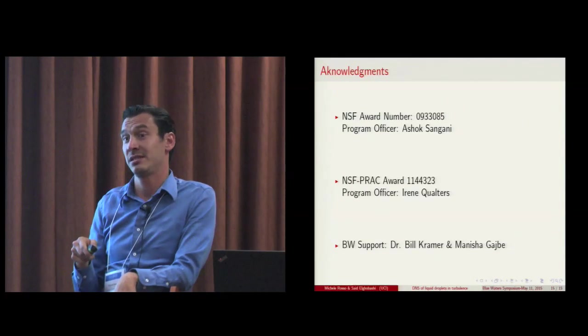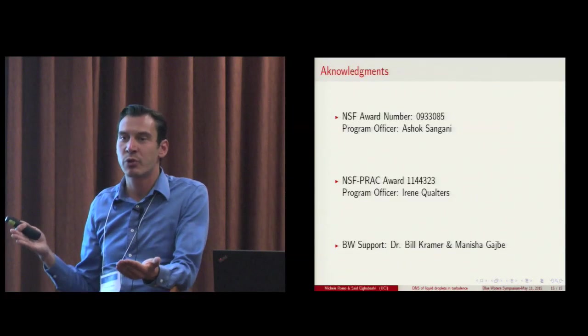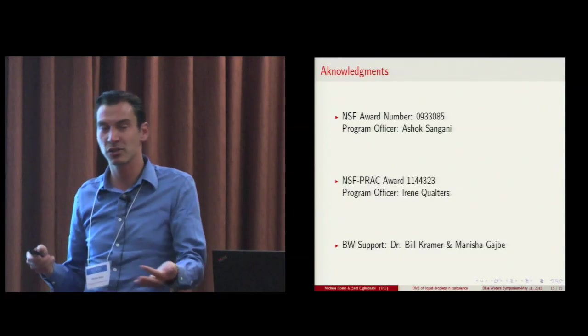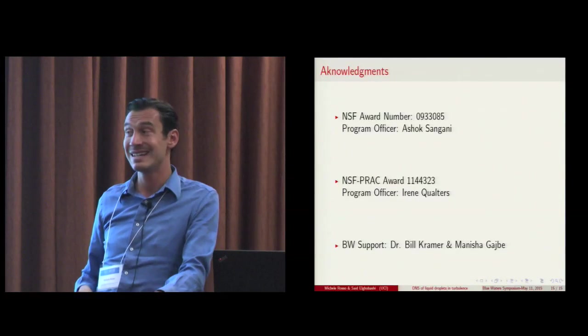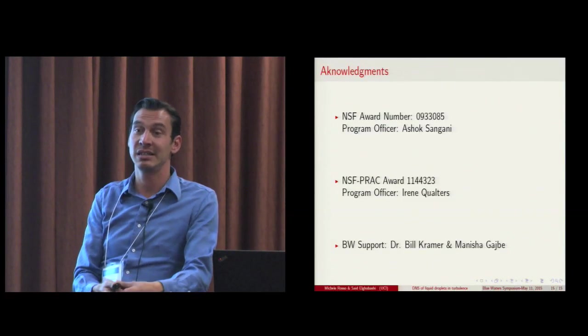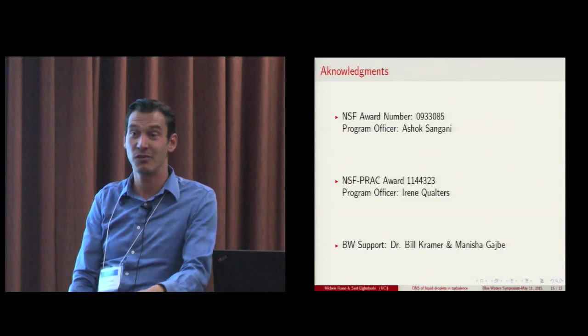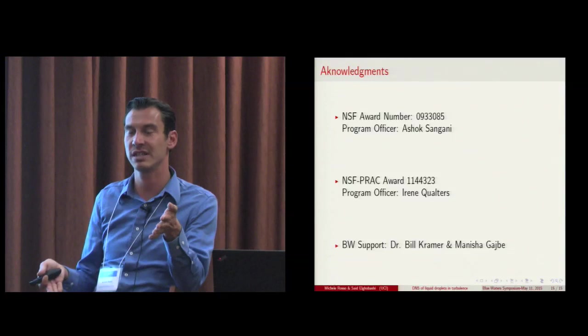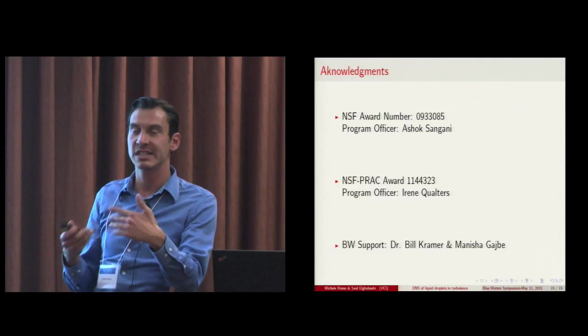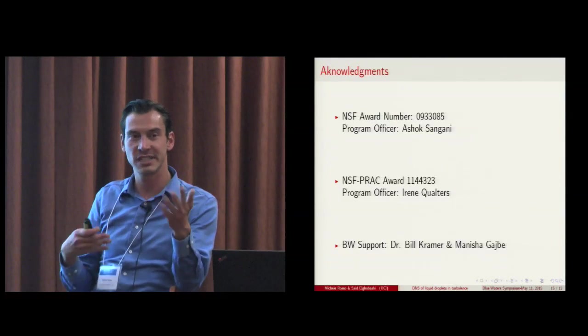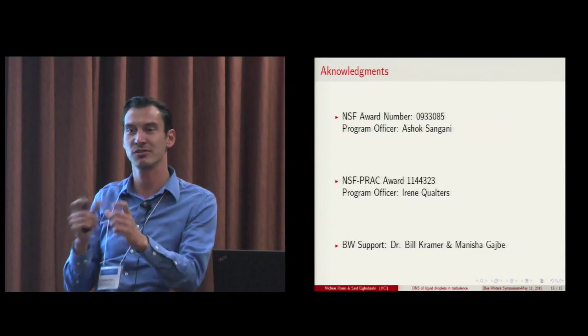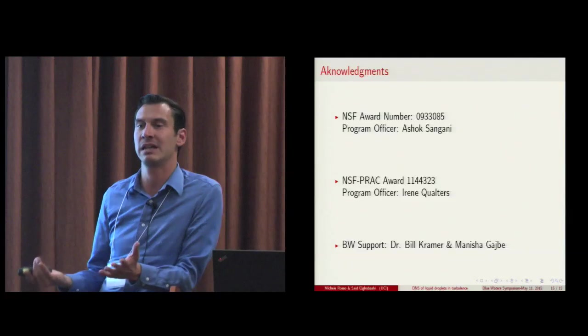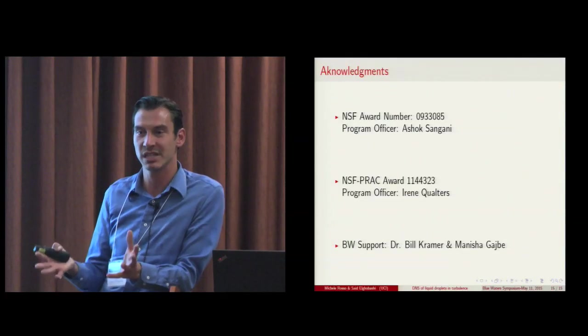The problem is the solution of the Poisson equation simply because you have a density jump. So that's the real computational challenge. And that's also why we needed throughout these years a lot of adjustment because it was not as trivial as just applying FFT. So that's the main bottleneck and the main problem that needs to be solved.